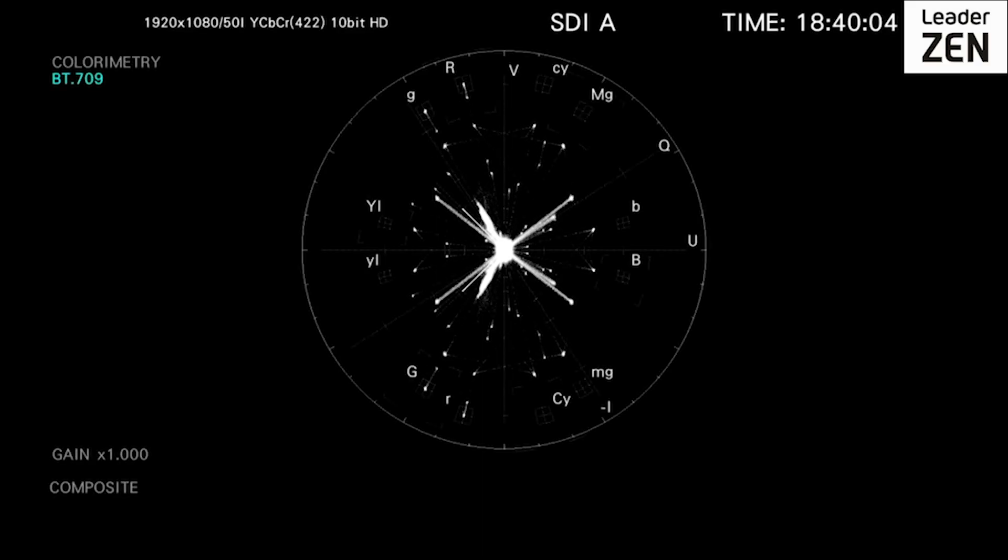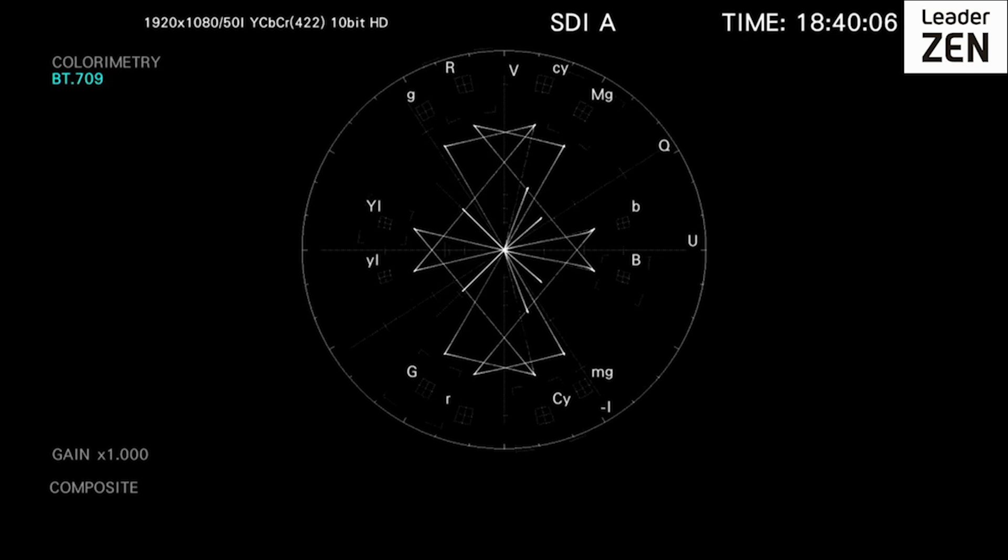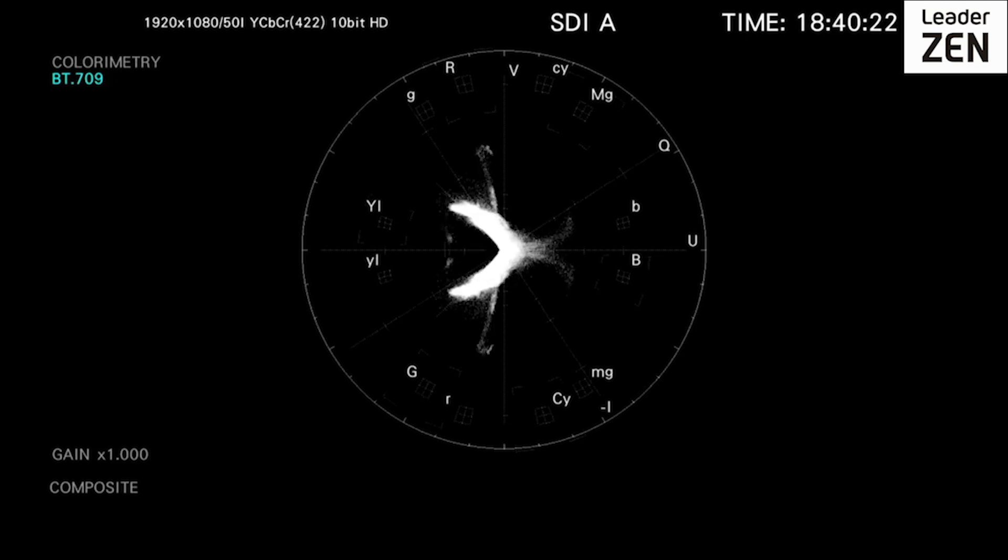For those unfamiliar with the vectorscope display, it can appear confusing and complicated with a rapidly moving trace dancing between a myriad of lines and markers on a graticule display. But once you get to know and understand how to use the vectorscope display, it will provide you with an invaluable instrument for television and film production.